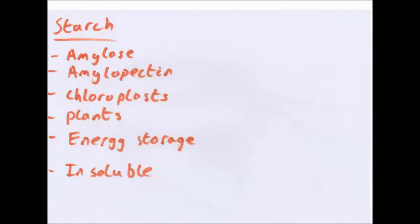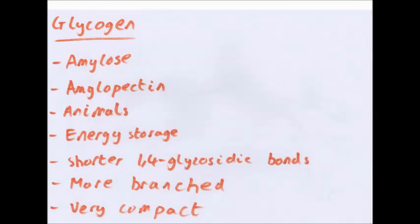So, starch. Starch is the storage molecule in plants, plants only. It contains amylose and amylopectin, both of them. It is very compact. It contains chloroplasts. It's found in the chloroplasts, sorry. And, any other storage areas like tubers and stuff. It's found only in plants. Energy storage molecule. And, like all energy storage molecules, it is insoluble. Now, if it's not soluble, it will not dissolve in water and will not affect the water potential of the cell, which is what you want. So, that's starch.